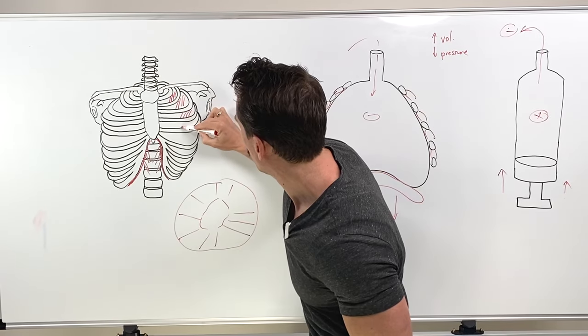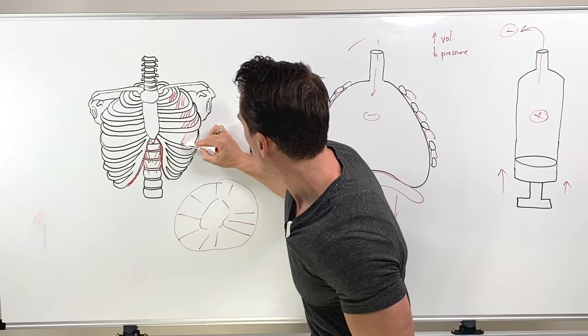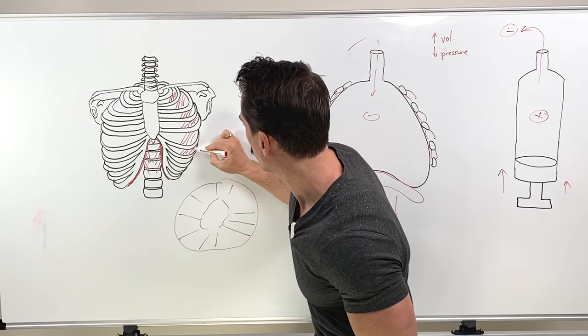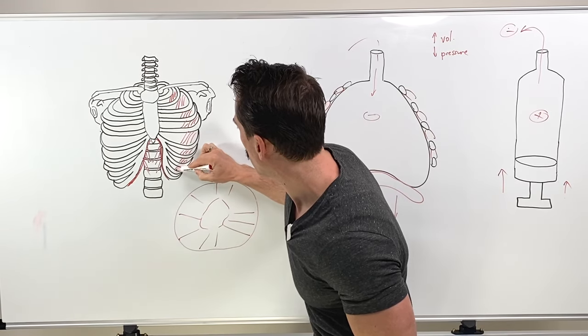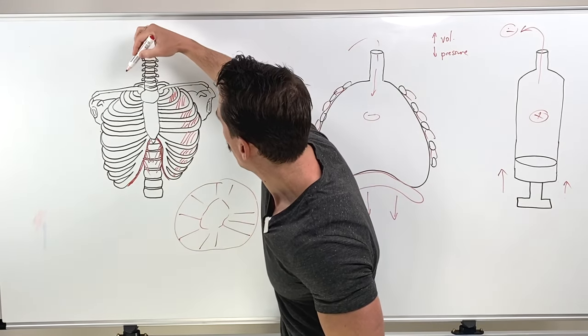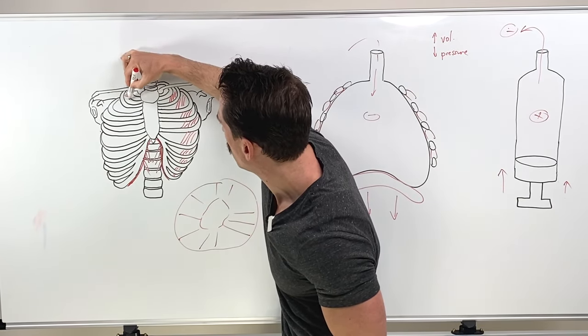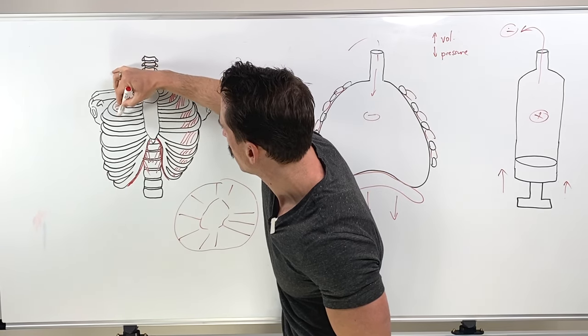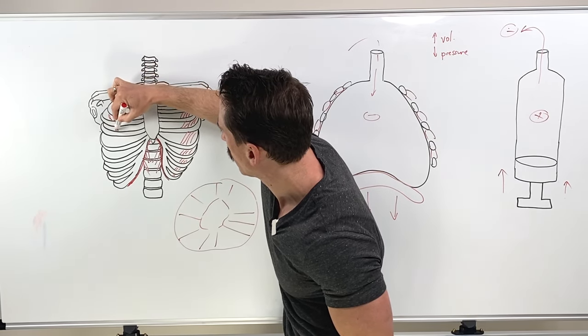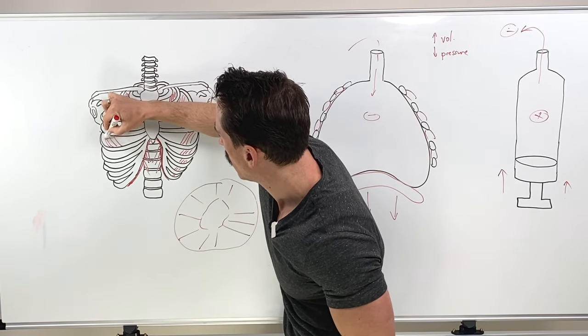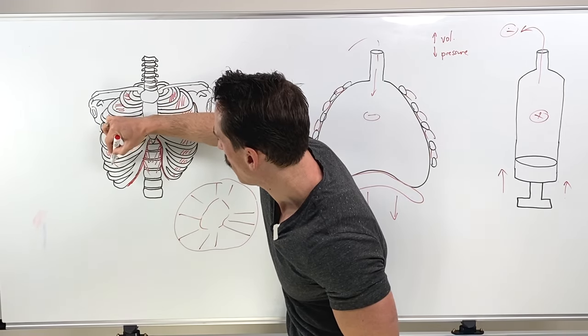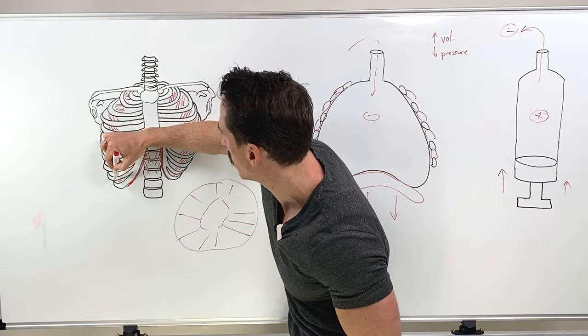These are the external intercostal muscles. Inter meaning between, costal meaning rib. So they're the between-the-rib muscles. Makes sense. So external intercostal, up and out. That's the fiber orientation.